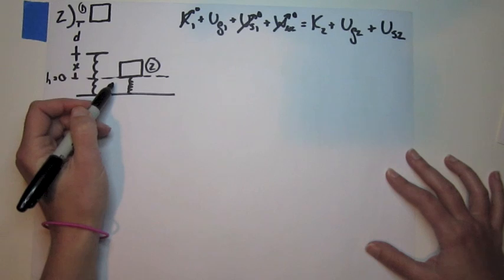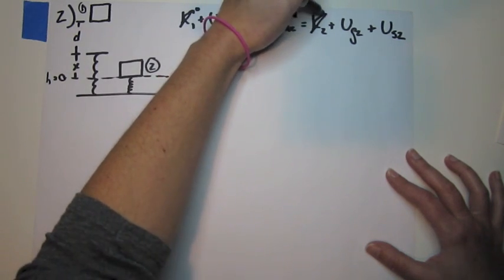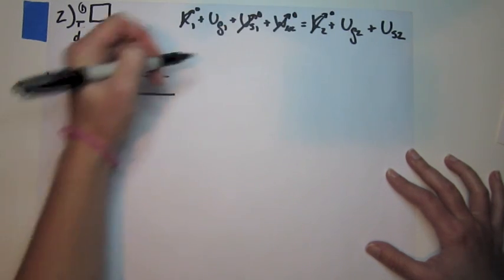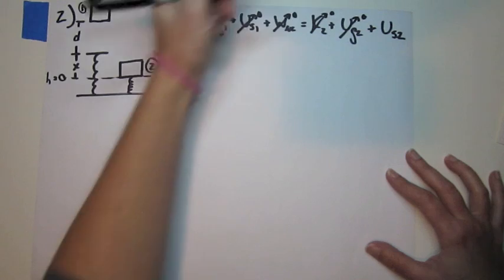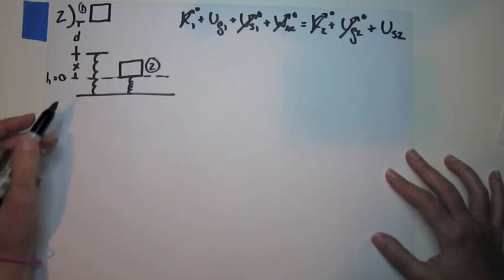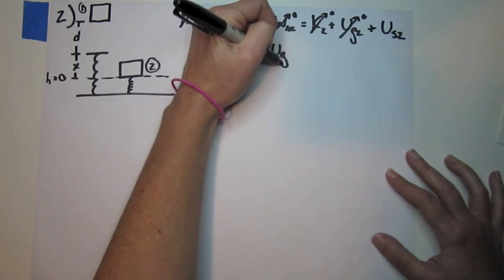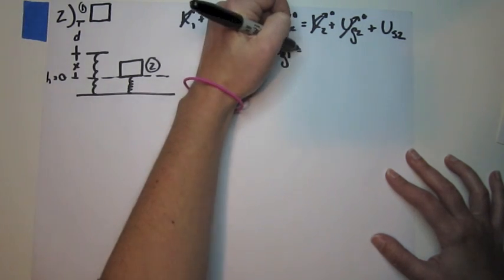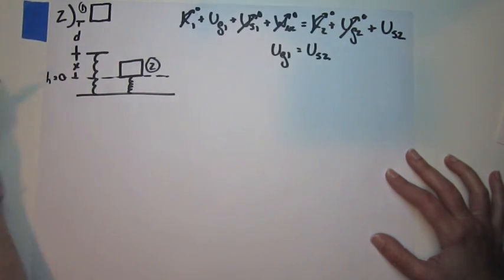At time two is when the spring is fully compressed. It's also at rest. At time two, it's as low as it gets, and so there's no more gravitational. But at time two, there is a compressed spring. So this problem boils down to the gravitational potential energy at time one equals the energy stored in the spring at time two.